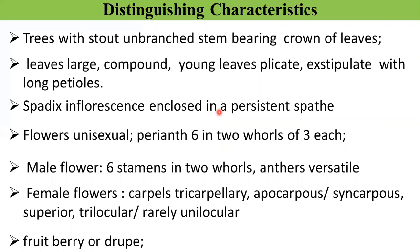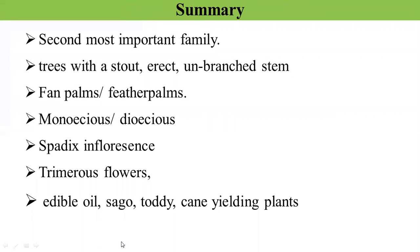Distinguishing characteristics: trees with stout, unbranched stem bearing a crown of leaves at the apex. Leaves are large, compound — young leaves applicate, exstipulate, with long petioles. Spadix inflorescence enclosed in a persistent spathe. Flowers unisexual; perianth six in two whorls of three each. Male flowers: six stamens in two whorls; anthers versatile. Female flowers: tricarpellary, syncarpous, rarely apocarpous, superior, trilocular, rarely unilocular. To summarize: this is the second most important family. Trees with stout, erect, unbranched stem; fan palms and feather palms; monoecious or dioecious; spadix inflorescence; trimerous flowers. Palm oil, sago, toddy, and cane-yielding plants belong to this family.